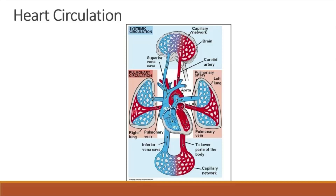Oxygenated blood returns to the heart and enters the left atrium via the pulmonary vein. Oxygenated blood in the left atrium then enters the left ventricle.